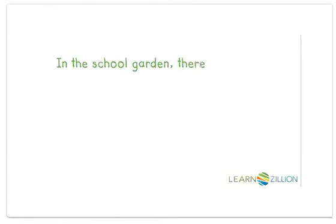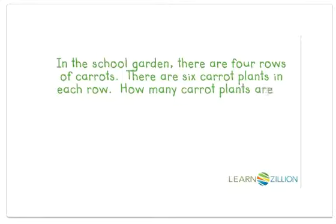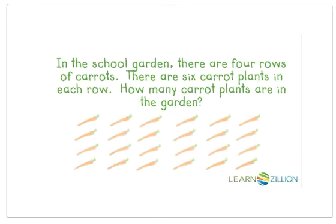In the school garden, there are four rows of carrots. There are six carrot plants in each row. How many carrot plants are in this garden?